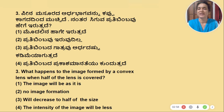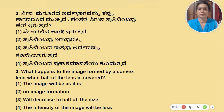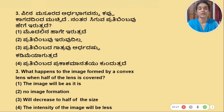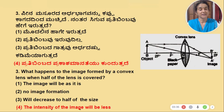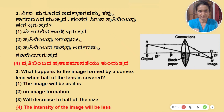What happens to the image formed by a convex lens when half of the lens is covered? The image will remain as it is. No image formation. Prathibimba will decrease to half of the size — the brightness will be less. The answer involves intensity: the depth and the next layer, bonus and barriers.